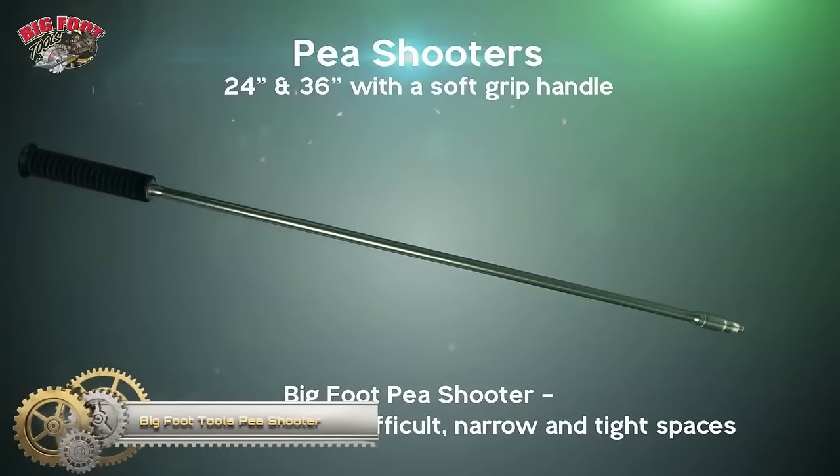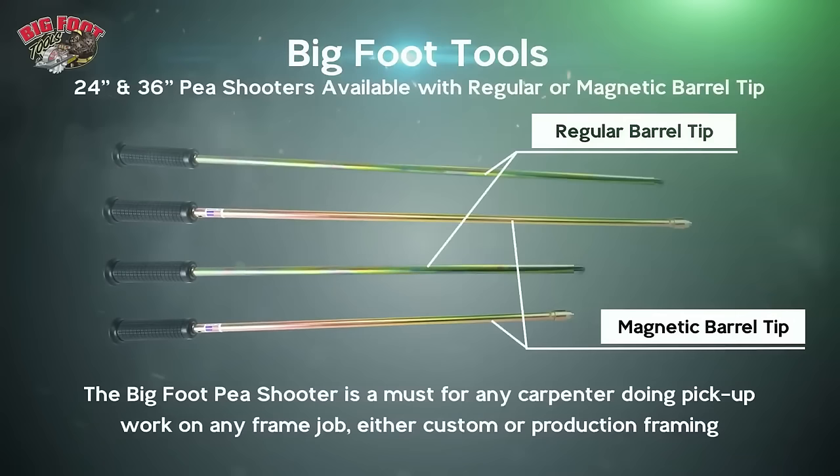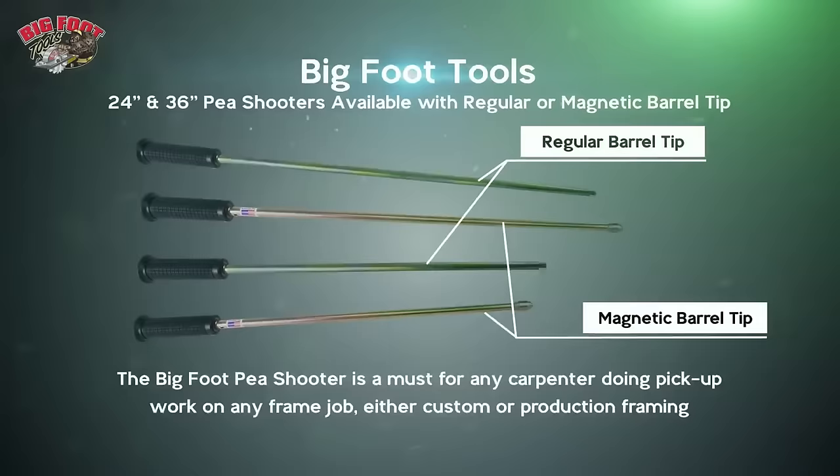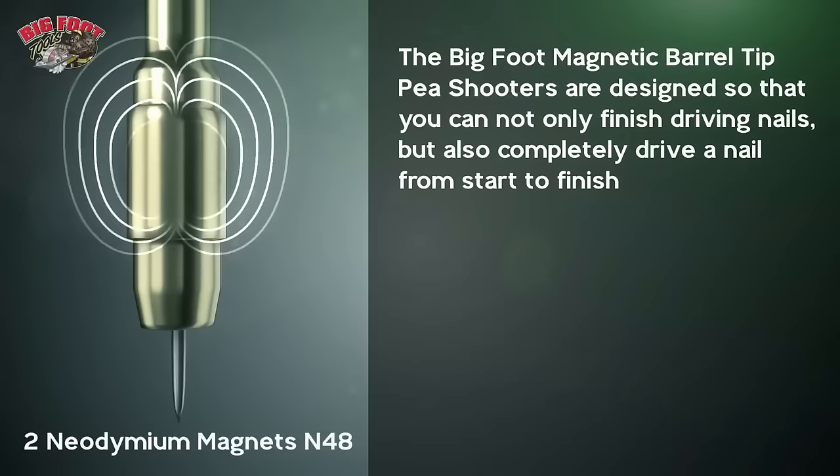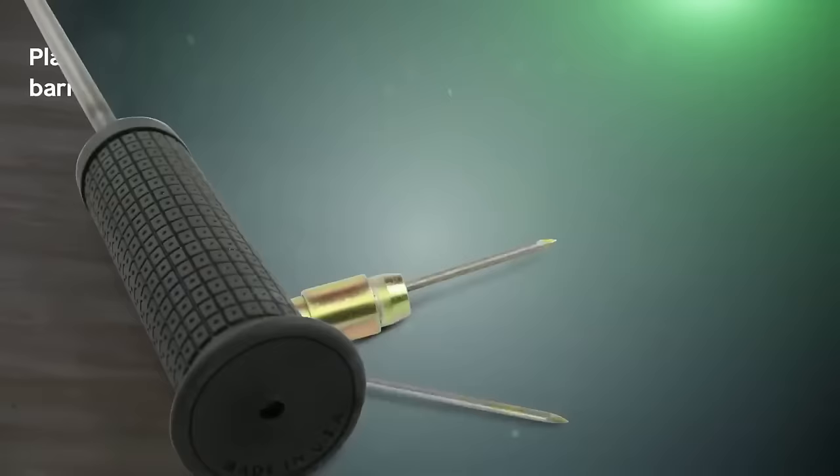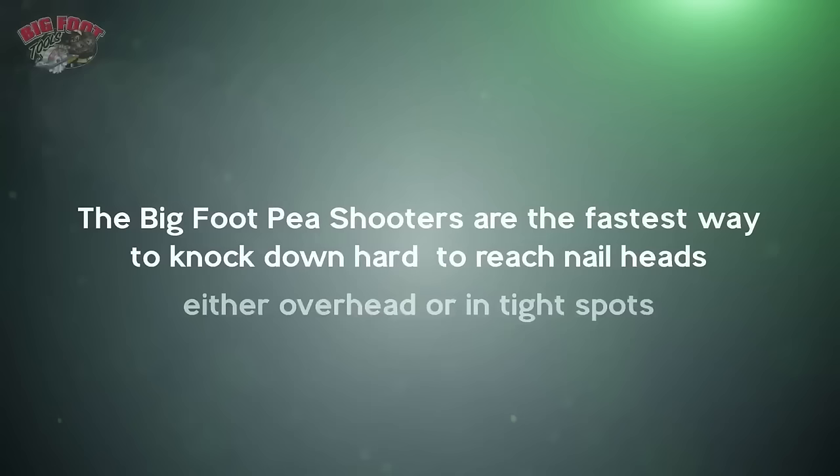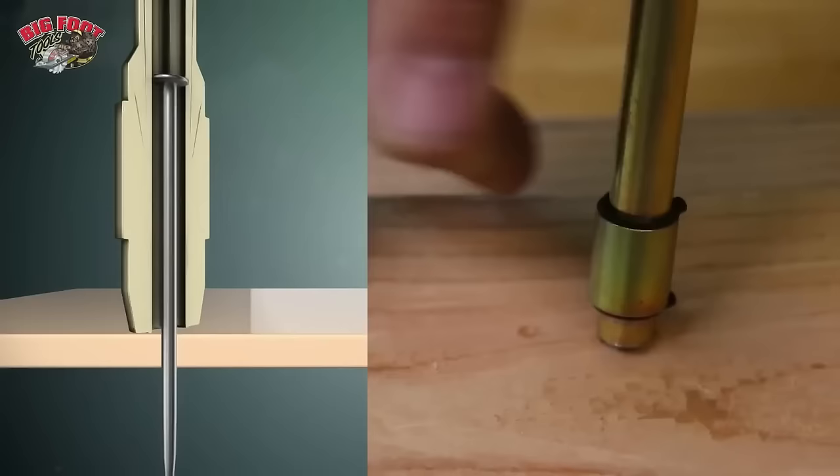Bigfoot Tools Peashooter is an indispensable tool with a long, thin metal body, featuring a plunger at one end and a magnetic tip at the other. It efficiently drives nails into hard-to-reach areas, making it a must-have for carpenters, electricians, plumbers, and DIYers. Crafted from durable materials, it offers reliability even with heavy use. The key benefits include easy access to difficult spots without the need for ladders or scaffolding, minimal effort required for operation, safety during use, and its robust construction designed for heavy-duty tasks. Whether you're a professional or a DIY enthusiast, a Bigfoot Tools Peashooter simplifies nail driving in challenging locations, making it an invaluable addition to your tool kit.